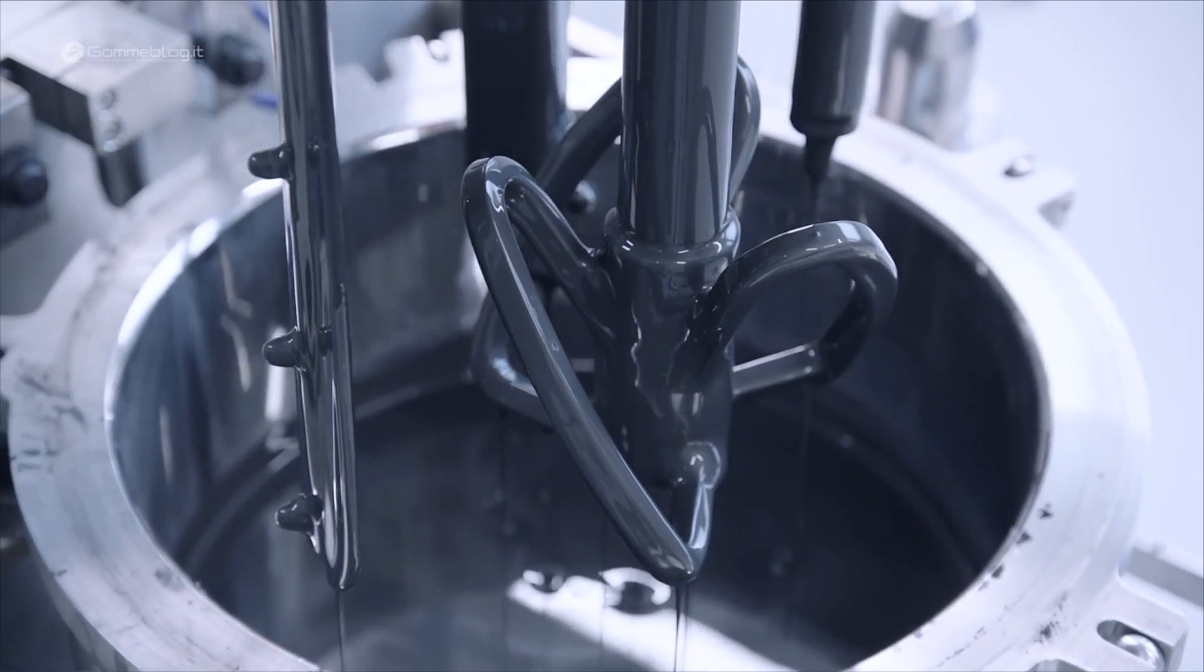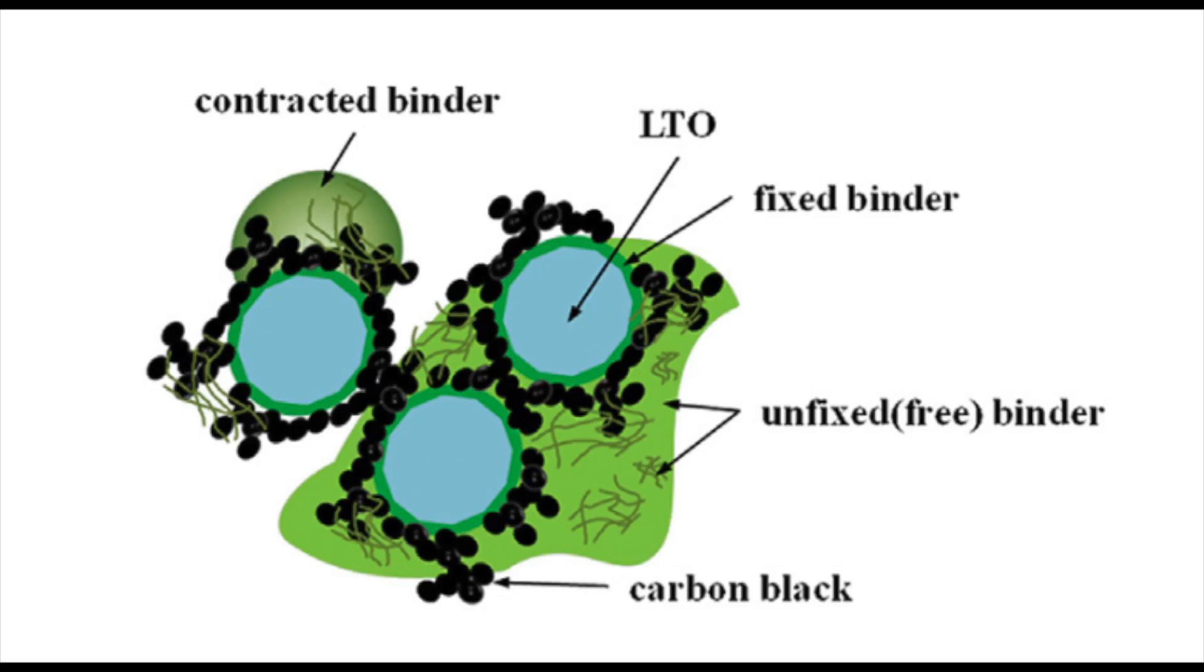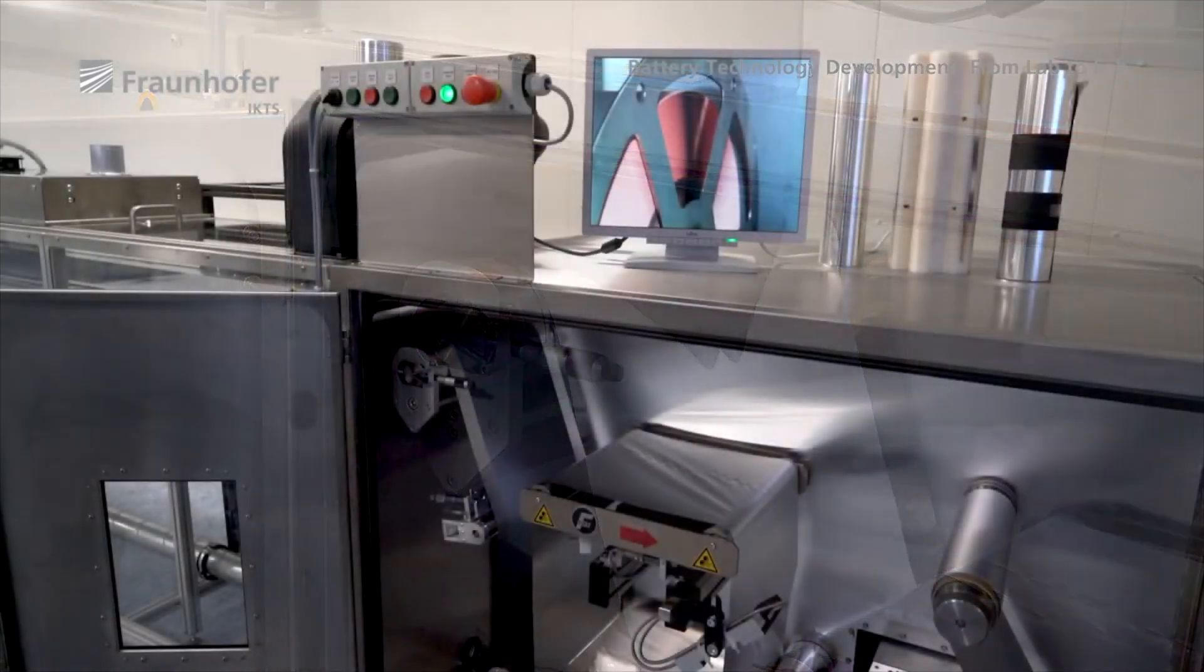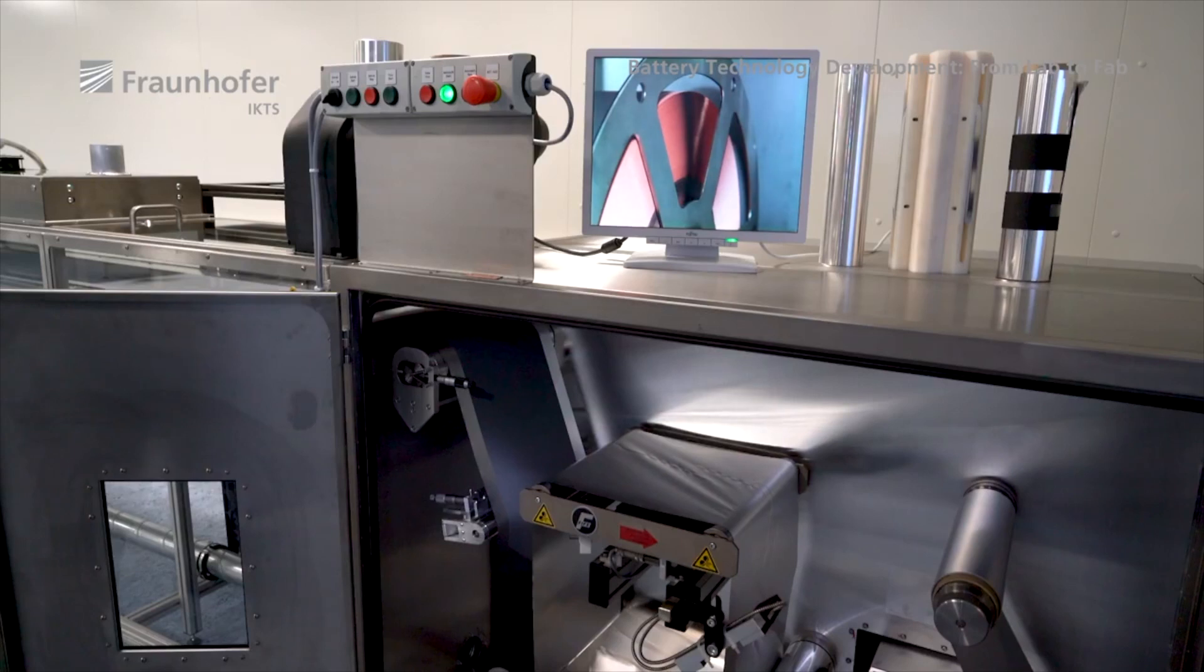Another challenge with the dry method is preventing degradation of the binder material when it's heated to near the melting point to activate adhesion. Striking the right balance for the temperature for heating the binder is crucial. As too hot a temperature will cause the electrode to lose porosity, which will hurt performance.